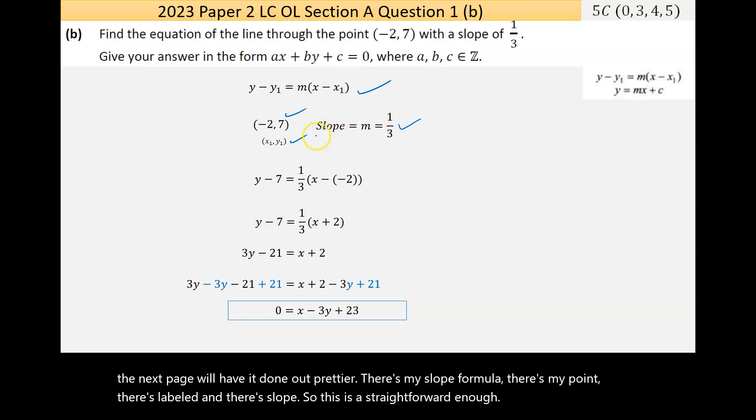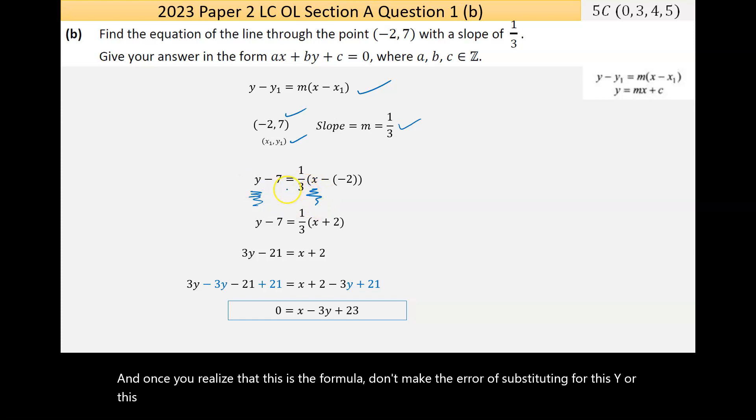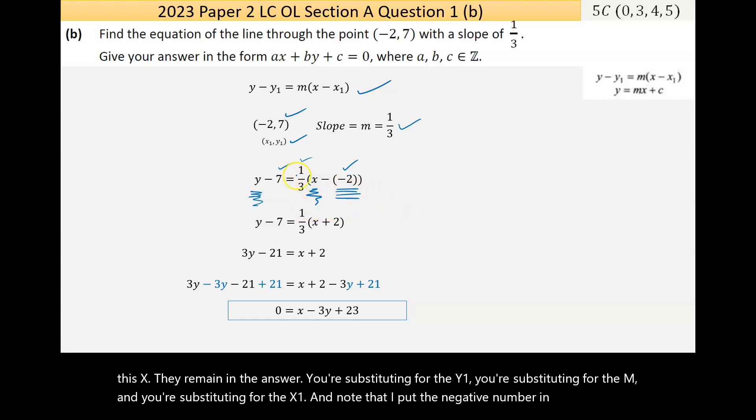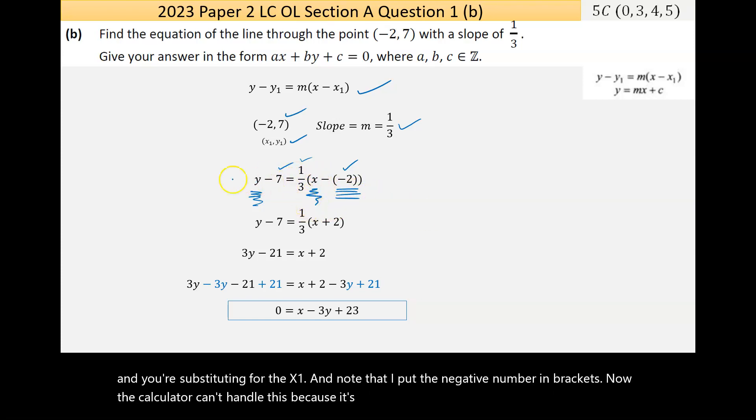This is a straightforward methodology that we should know. Once you realize that this is the formula, don't make the error of substituting for this y or this x - they remain in the answer. You're substituting for the y1, the m, and the x1. Note that I put the negative number in brackets so the calculator can handle it.